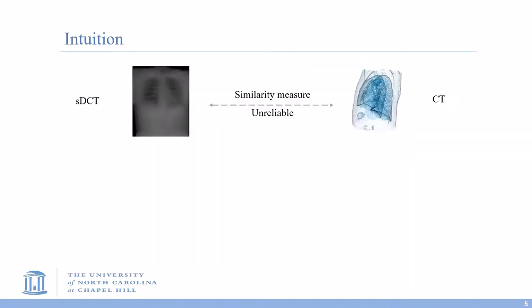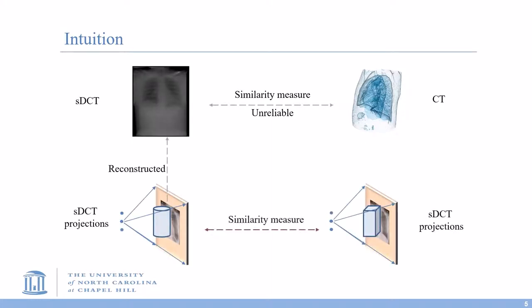So, if the similarity measure does not work well in the 3D space, how about the projection space? Will the similarity measure in the projection space be more reliable? How are we going to get the sDCT projections from a CT image?